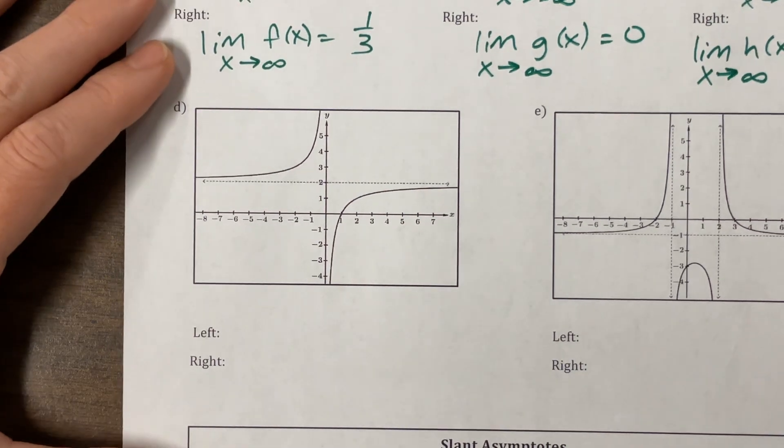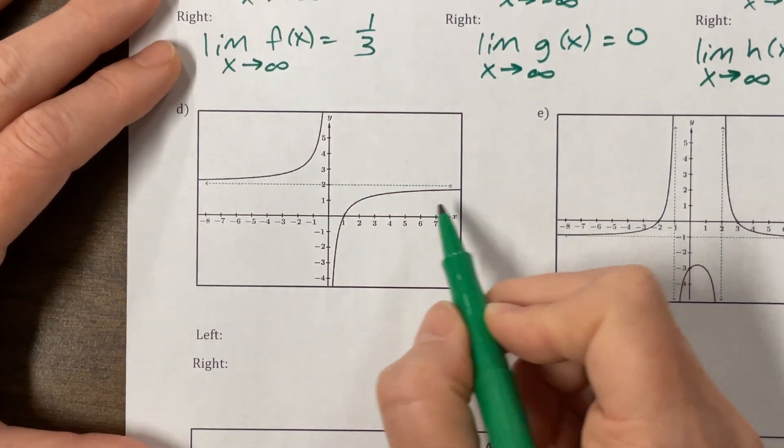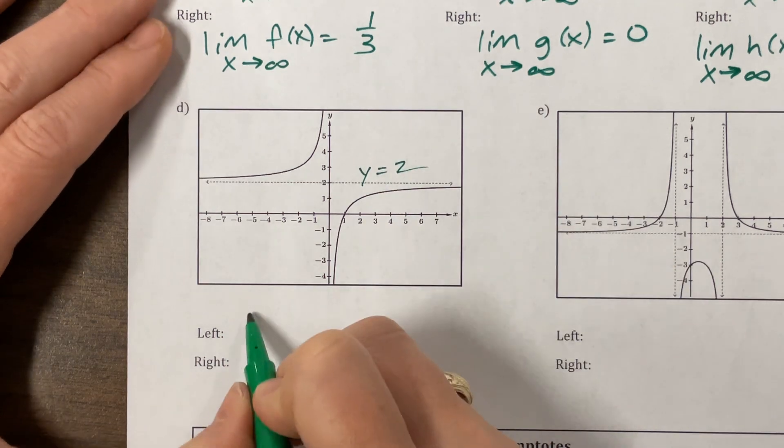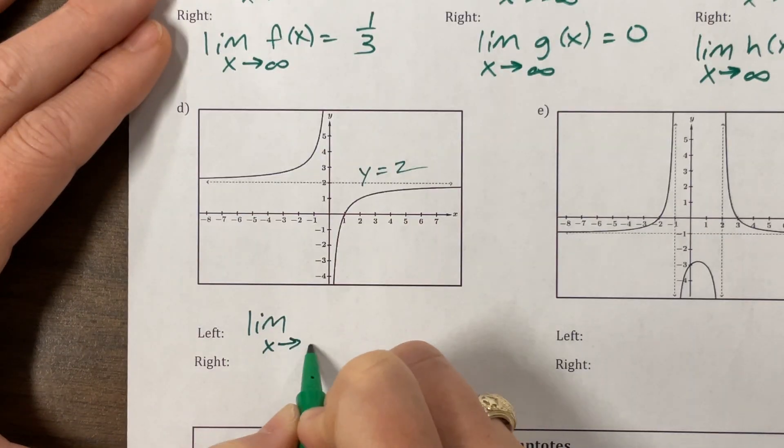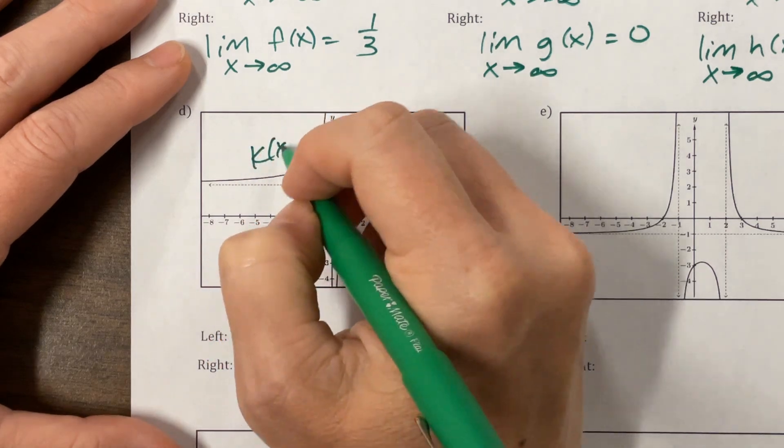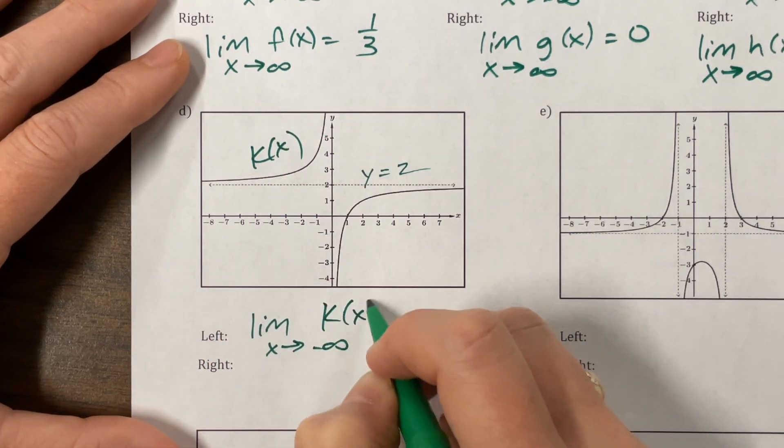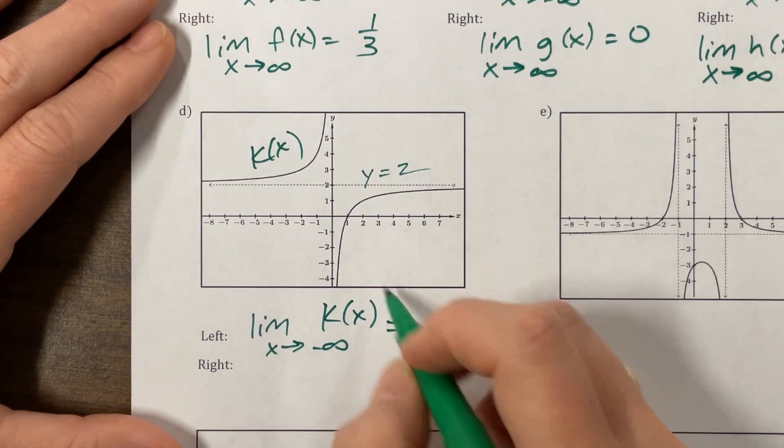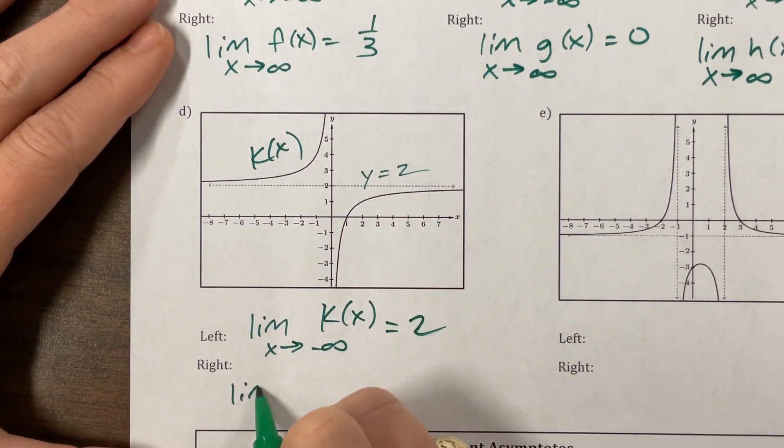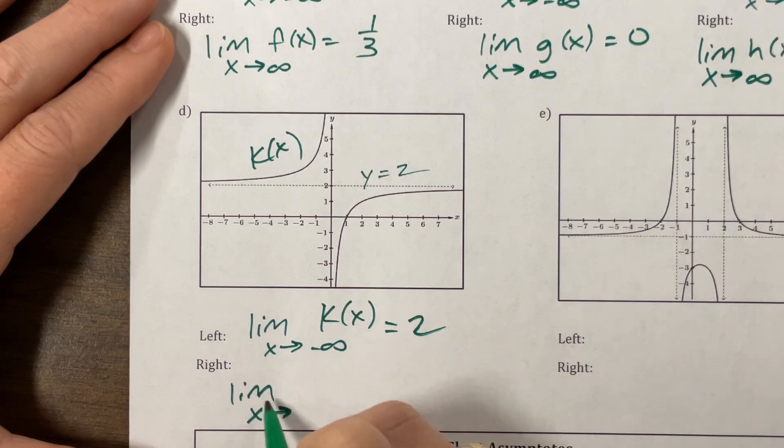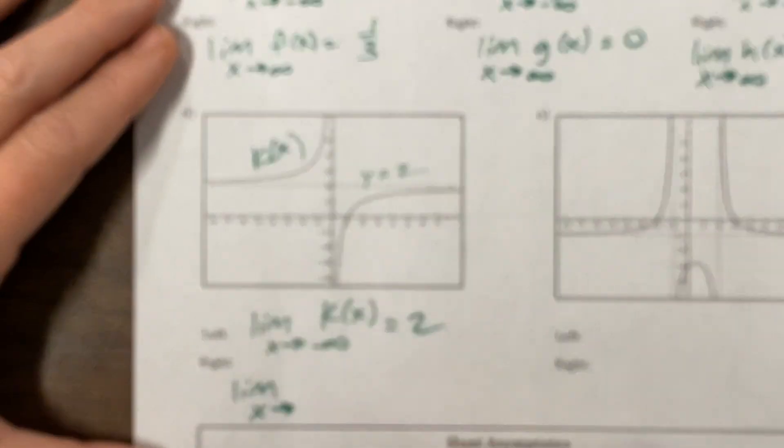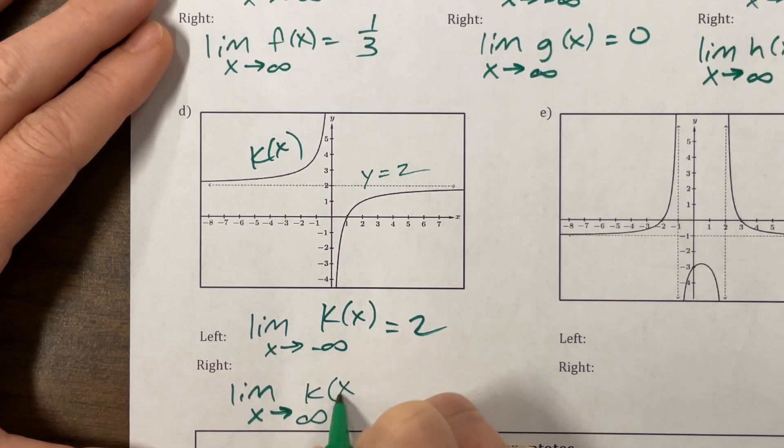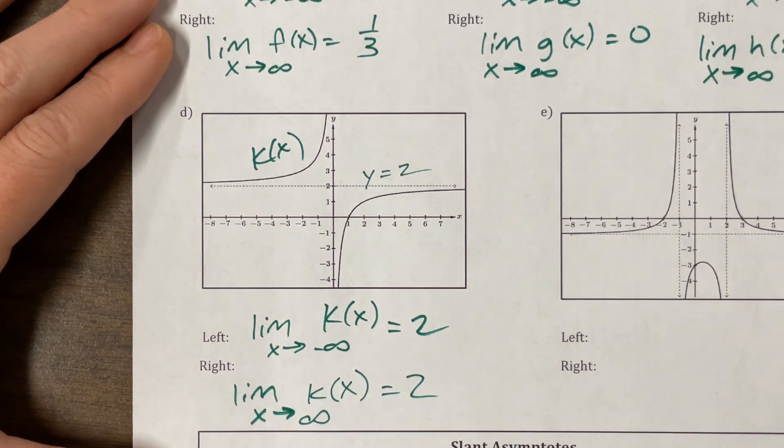Okay. Say they give you the graph. What this appears to have an asymptote of two, y equals two is our lovely little asymptote. The limit as x goes to negative infinity of, we'll call this k(x) because k is our favorite letter. It is. Got it, everybody? Your favorite letter is k. What's happening? We go to two and the limit as x goes to infinity of k(x) is equal to two also.